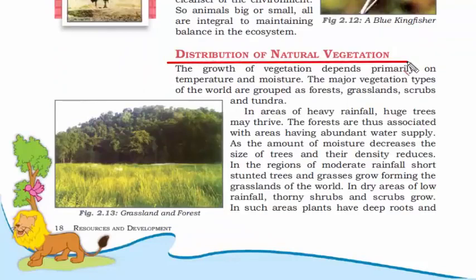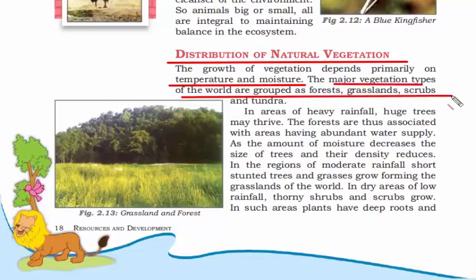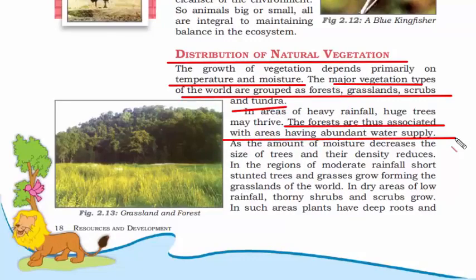The growth of natural vegetation depends primarily on temperature and moisture — a plant needs good temperature with good rainfall and moisture. The major vegetation types of the world are forest, grassland, scrubs, and tundra (the cold region). Wherever there is forest, there is abundant water supply and very large trees. The tropical region — the equatorial region — has huge trees like tropical evergreen and tropical deciduous forests. As you move toward the temperate zone or the north pole, tree size decreases because there is less moisture.